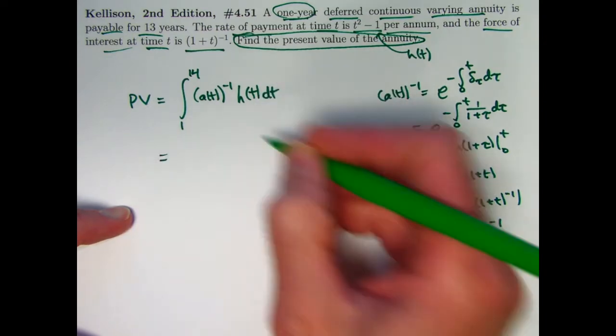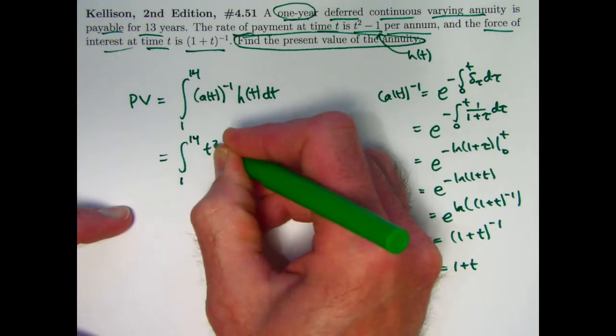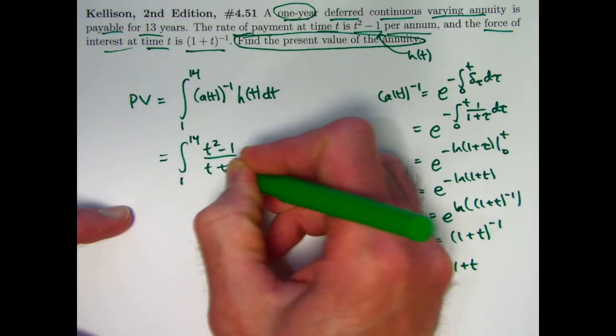Let's go ahead and plug those things in here. Also plug in h of t. We're going to be integrating from 1 to 14, t squared minus 1 over 1 plus t or t plus 1.